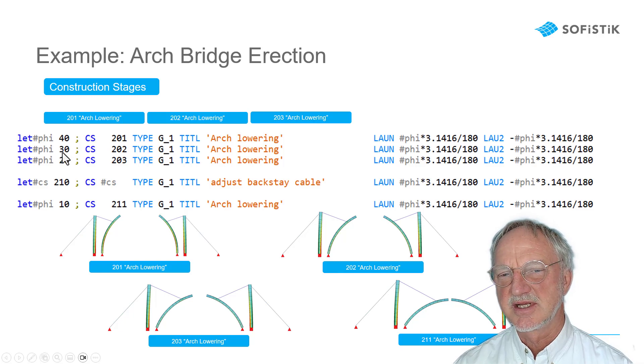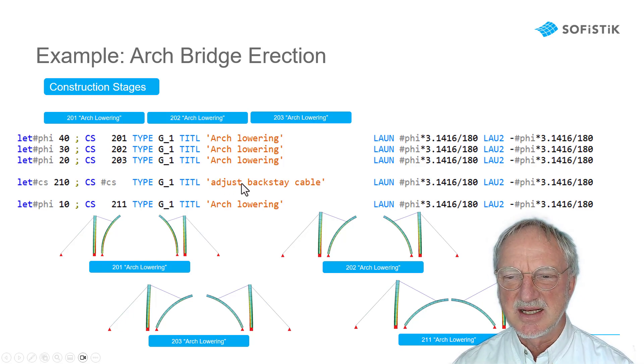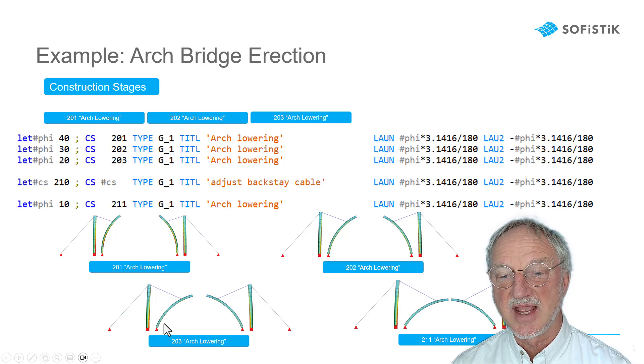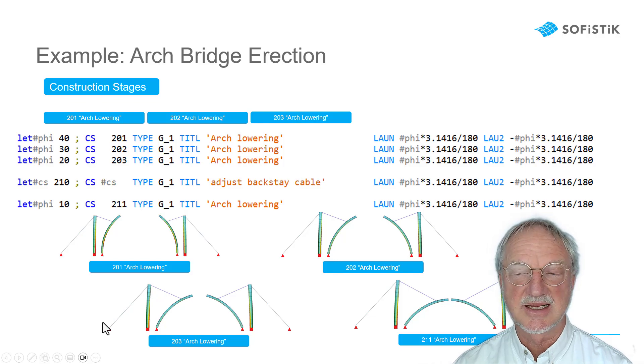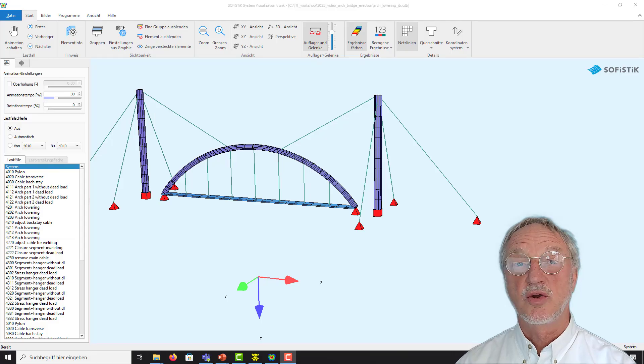The next step with 30, 20, 10 degrees. In between maybe it is necessary to make some adjustment for the backstay cables. Because the weight of the arc here gets higher and we need more pre-stress in the backstay.